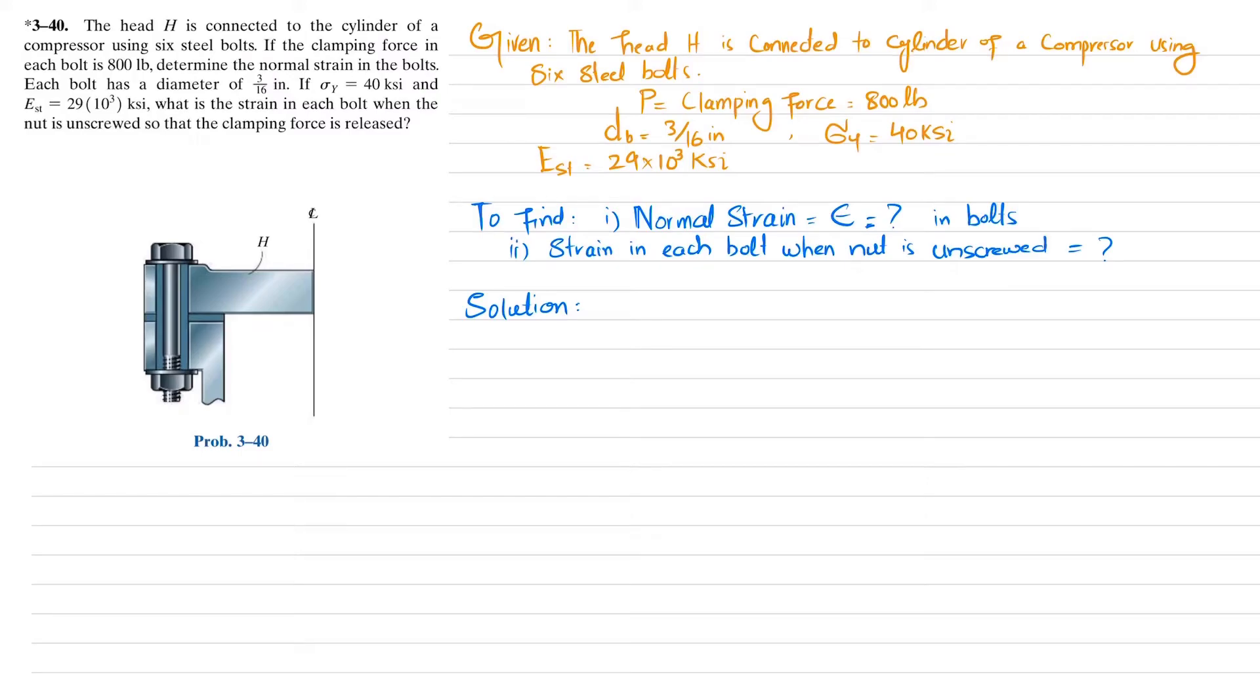Welcome back to Problem 3.40. The head H is connected to the cylinder of a compressor using six steel bolts. If the clamping force in each bolt is 800 pounds, determine the normal strain in the bolt. Each bolt has a diameter of 3/16 inch, yield strength is 40 ksi, and modulus of elasticity of steel is 29×10³ ksi. What is the strain in each bolt when the nut is unscrewed?